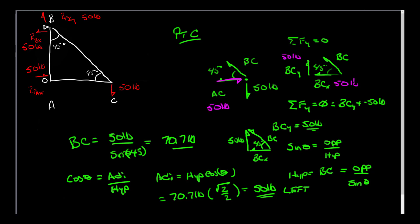So I can now draw in my force vectors. Vector BC equals 70.7 pounds, and vector AC equals 50 pounds. Going the other way, that's also 50 pounds, which makes perfect sense for what I solved for at A. I also know there's a vector up here of 70.7 pounds opposing the vector coming in. Next up, we're going to solve for the internal forces at B.